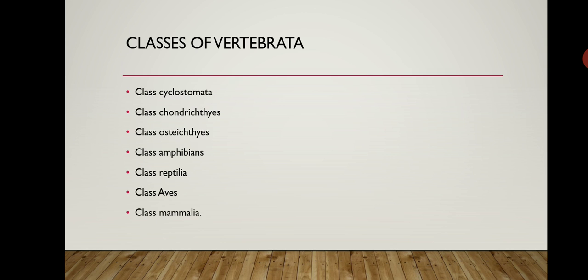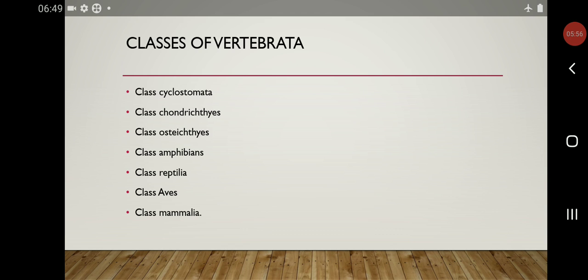The classes of Vertebrata are: Class Cyclostomata, Class Chondrichthyes, Class Osteichthyes, Class Amphibia, Class Reptilia, Class Aves, and Class Mammalia. Vertebrata and Chondrichthyes will be covered in the next module. Thanks for watching my video, please subscribe to my channel.